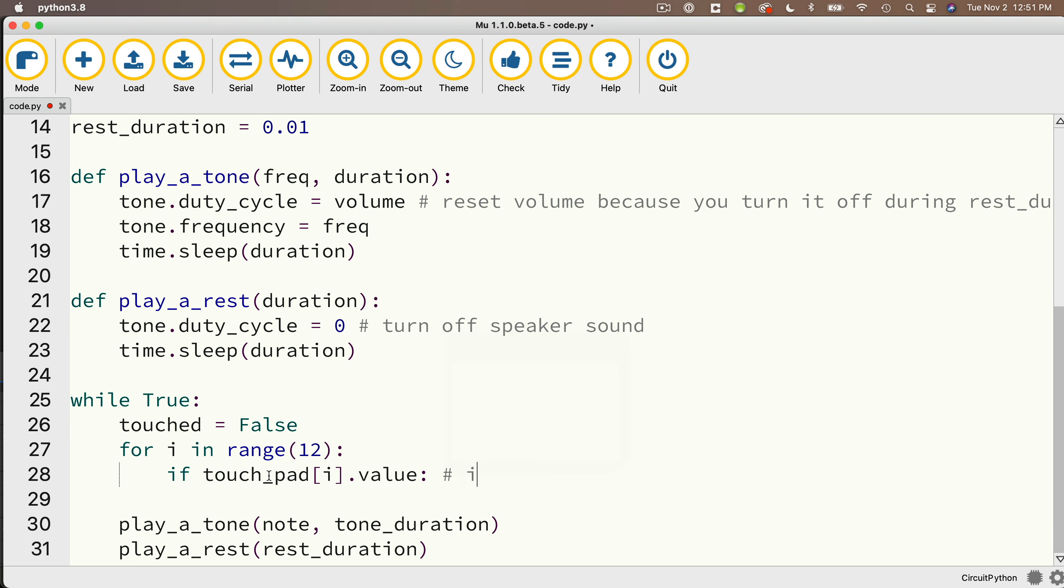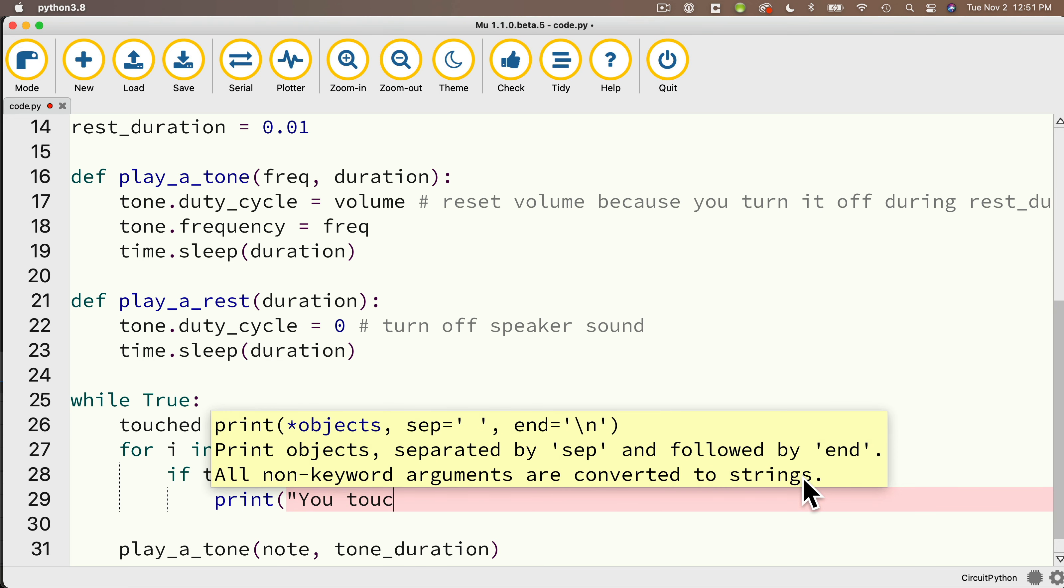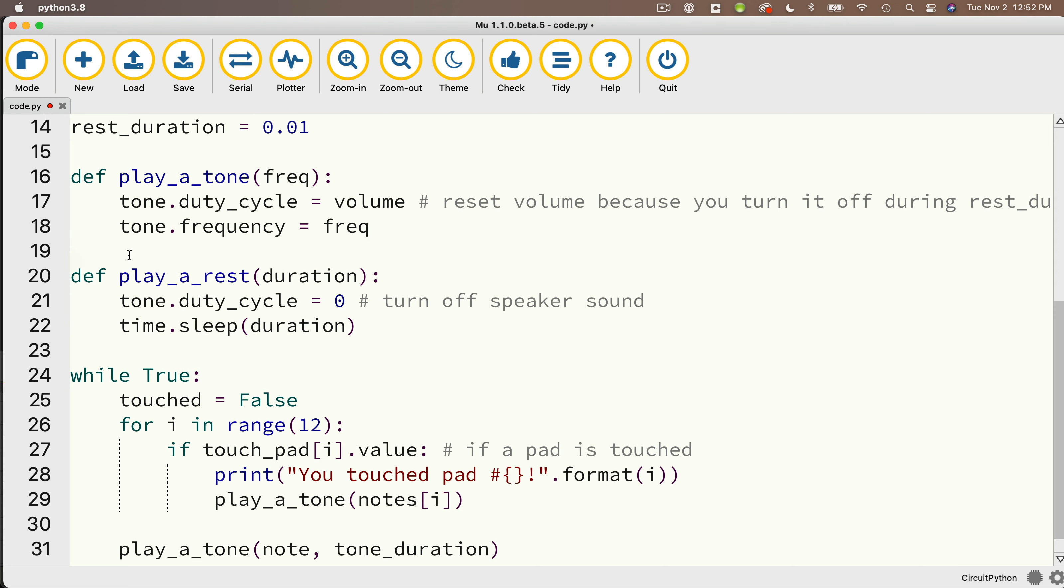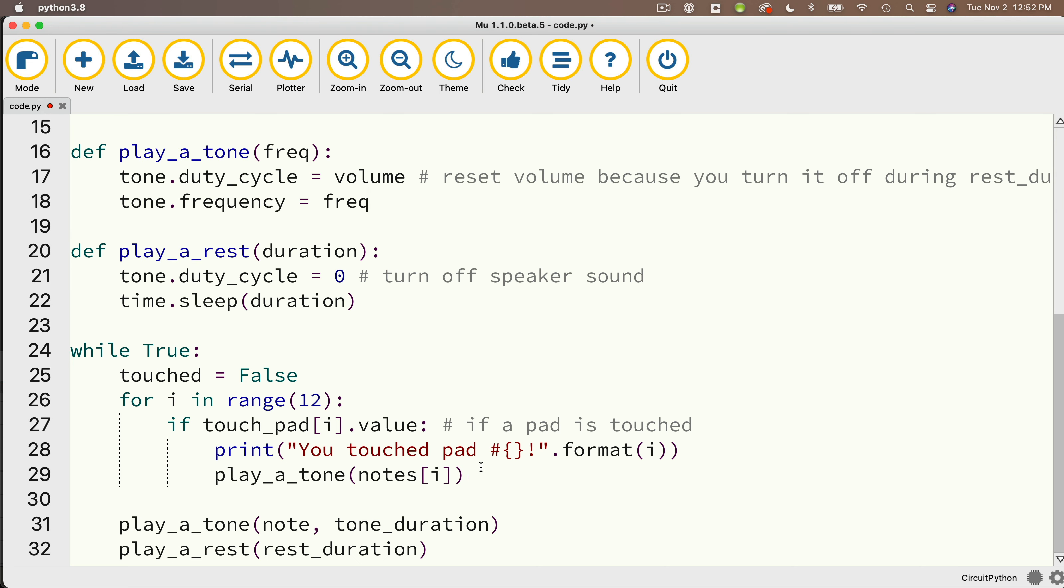So down below we're going to say if touch_pad[i].value colon. Now remember this is going to be true if a touch on one of the touch pads is detected. So underneath that we'll say print and in parentheses and in double quotes we'll say you touched pad number sign and then we'll put in curly braces exclamation point close quote dot format and then in parentheses i. And then underneath this we'll say play a tone calling notes[i]. But we're going to make a change to the play a tone function because we no longer need a duration. We're going to continue to play this tone as long as a finger is on the touch pad.